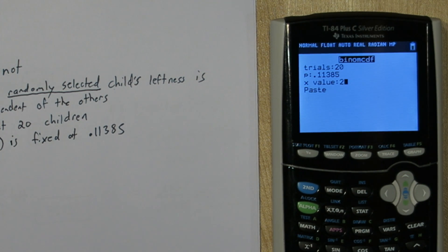What this will do is calculate the probability we get 0, 1, or 2 children in the sample of 20 that are left handed. In other words, it will calculate the complement. So all we need to do now is do 1 minus that.